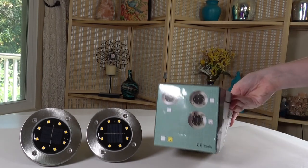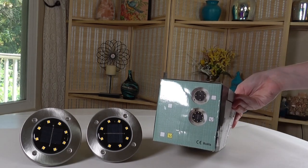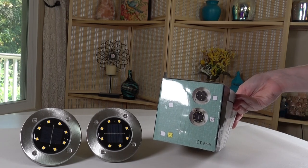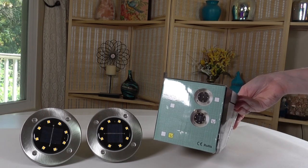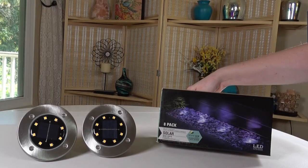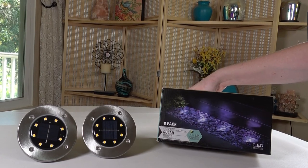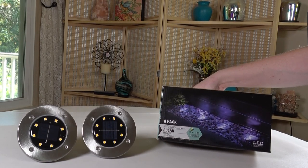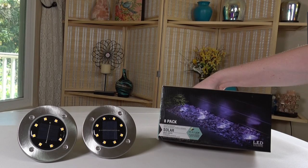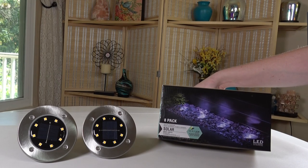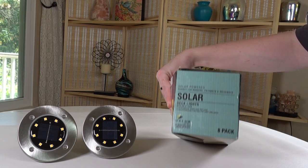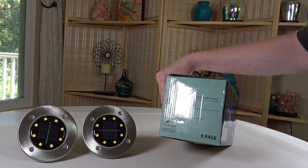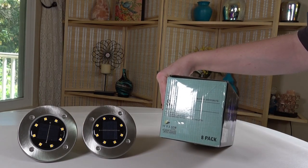And then on the other side it shows you the type you got. There's different types. On the front you can see the example of how they can be placed in the ground. This side mentions that they are auto on at dusk.